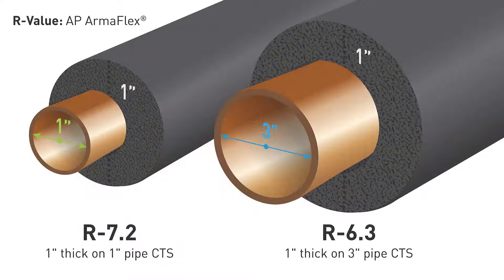Based on this equation, the R-Value gets larger as the insulation thickness increases, but also as the pipe size gets smaller. For example, 1-inch thick insulation will have a higher R-Value on a 1-inch pipe than it will on a 3-inch pipe.